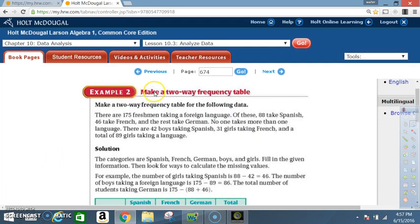Example 2. Make a two-way frequency table. Make a two-way frequency table for the following data. There are 175 freshmen taking a foreign language. Of these 88 take Spanish, 46 take French, and the rest take German. No one takes more than one language. There are 42 boys taking Spanish, 31 girls taking French, and a total of 89 girls taking a language.